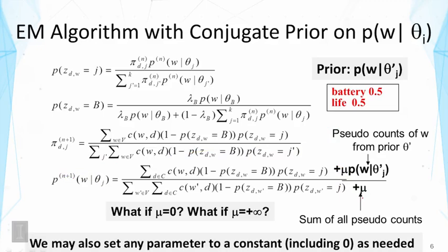This is one way to impose a prior. We can also impose some other constraints. For example, we can set any parameters to a constant, including zero as needed. We may want to set one of the pis to zero. This would mean we don't allow that topic to participate in generating that document. This is only reasonable when we have prior knowledge that strongly suggests this.